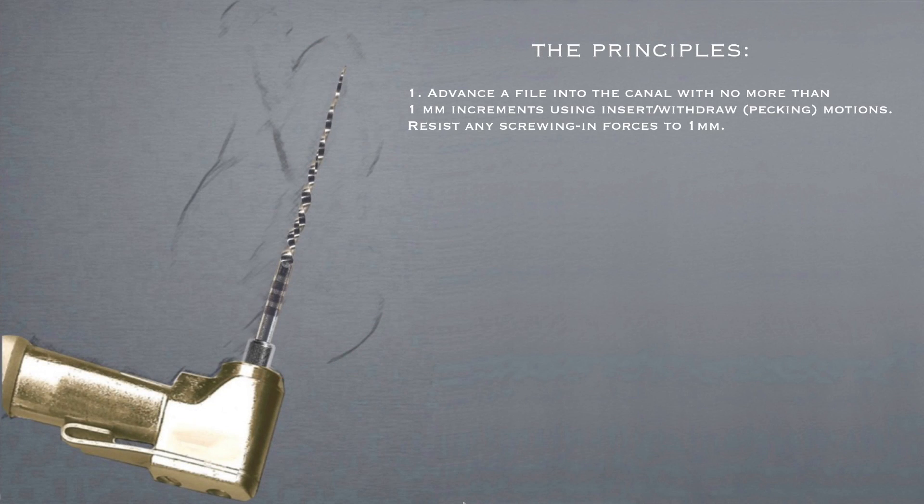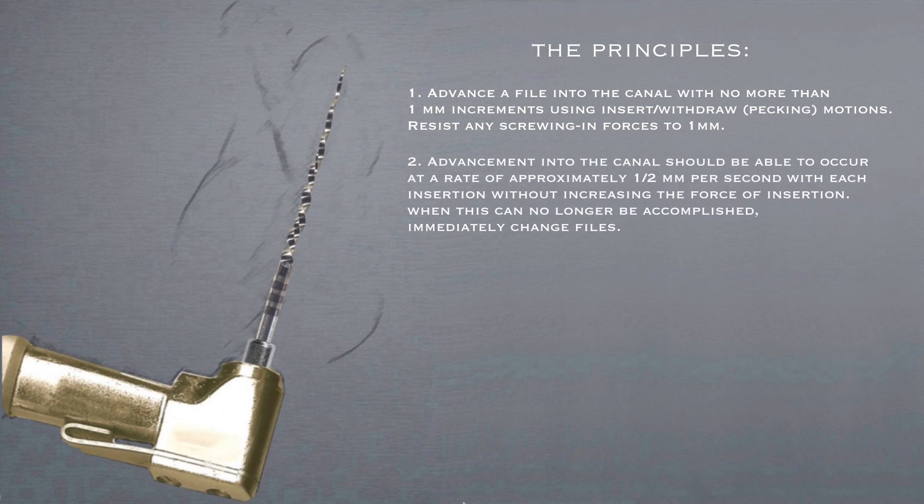Well, first, advance a file into the canal with no more than 1 mm increments using insert-withdrawal pecking-type motions, and resist any screwing-in forces to 1 mm as well. Two, advancement into the canal should be able to occur at a rate of approximately 1.5 mm per second with each insertion, without increasing the force of insertion. When this can no longer be accomplished, immediately change files.